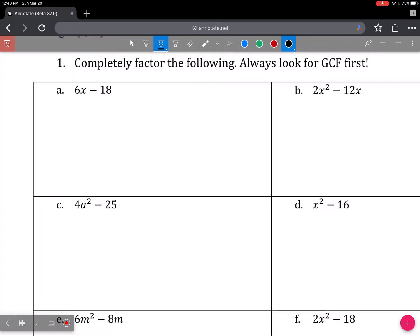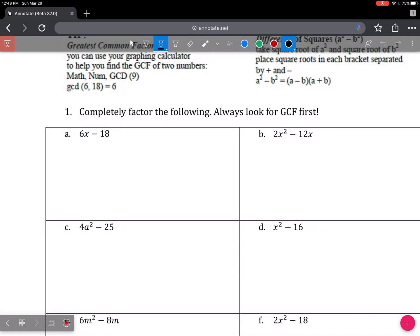The goal here is to always look for a greatest common factor between the terms. For example, 6x and 18 have a greatest common factor of 6. If you didn't know that, you could use your calculator to help you. The Texas Instruments has a GCD function. You just have to remember to type in the comma after the first number between those brackets.